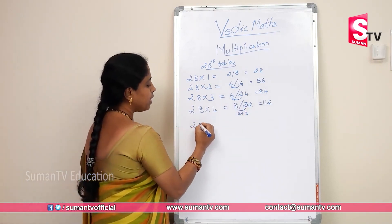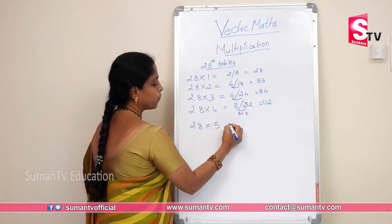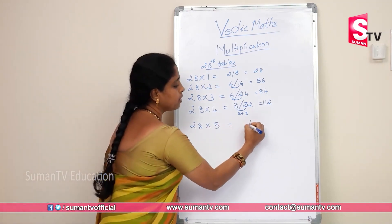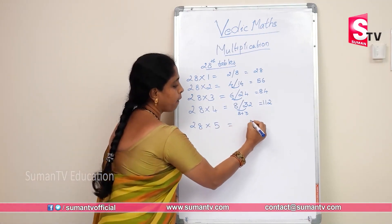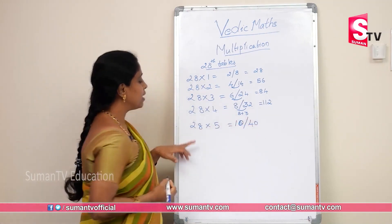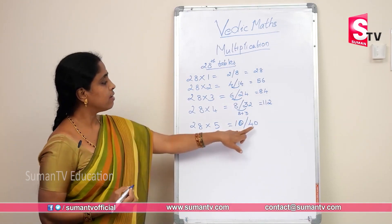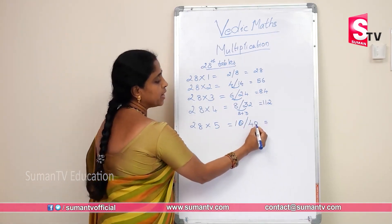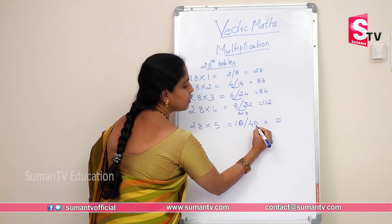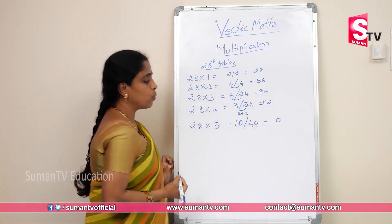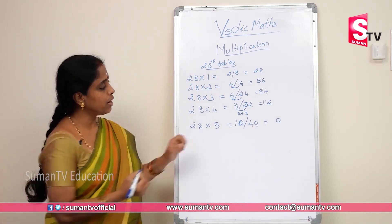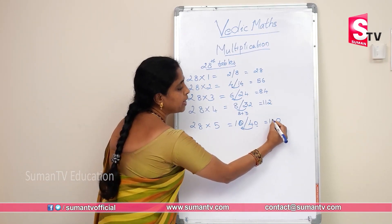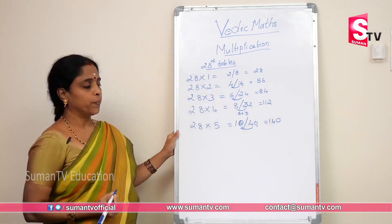28×5: 5×8 is 40. 5×2 is 10. The unit digit is 0, end number is 0. Write 0 in unit place. Carry over to get 28×5 is 140.